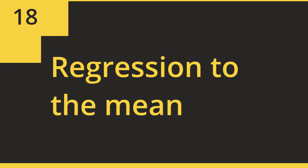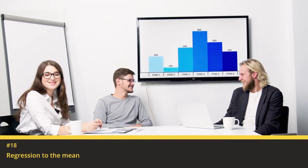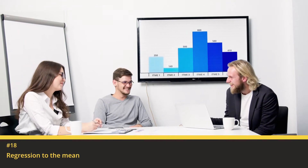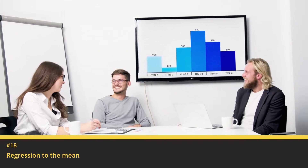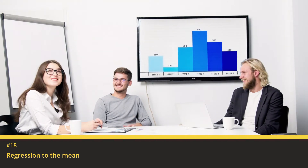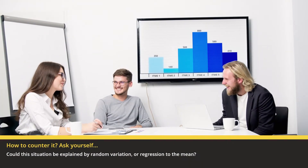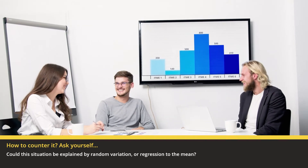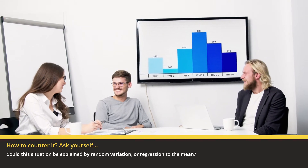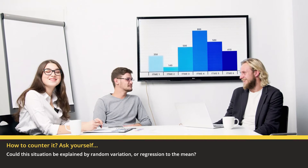18. Regression to the Mean: Average values will fluctuate around a mean. Decreased or increased performance may simply be these random fluctuations, not due to an identifiable cause. Ask yourself: could this situation be explained by random variation, or regression to the mean?